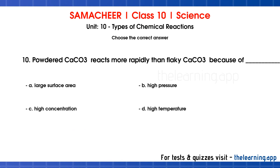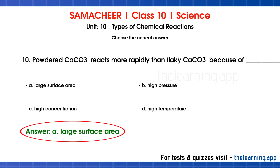Tenth question: Powdered CaCO3 reacts more rapidly than flaky CaCO3 because of dash. Options are A) large surface area, B) high pressure, C) high concentration, D) high temperature. Correct answer is option A, large surface area. Powdered form has greater surface area exposed to reactants, increasing the reaction rate.